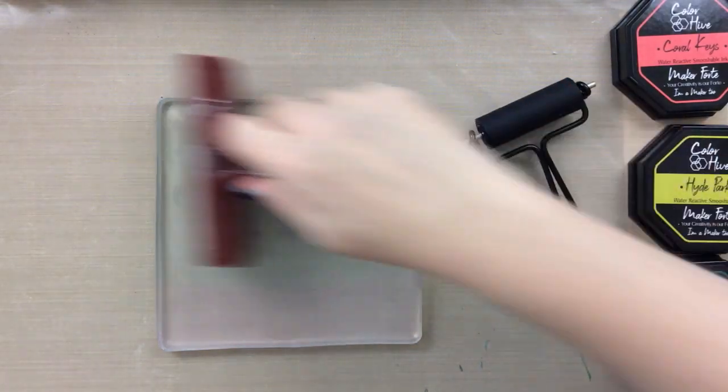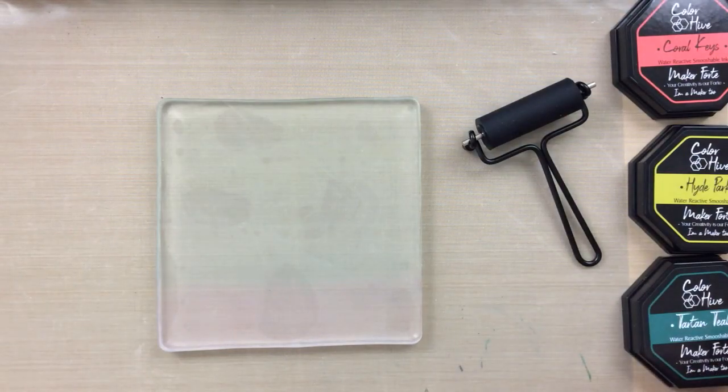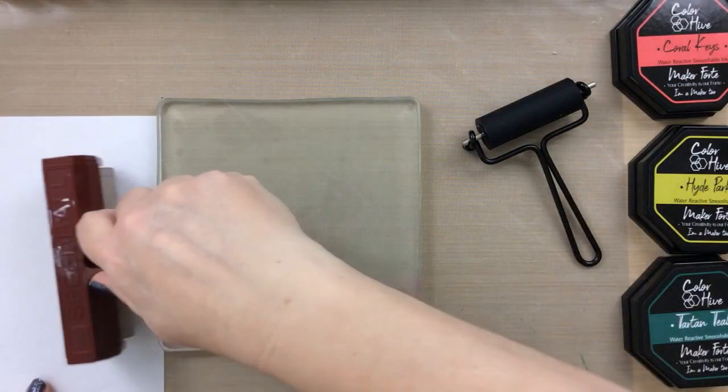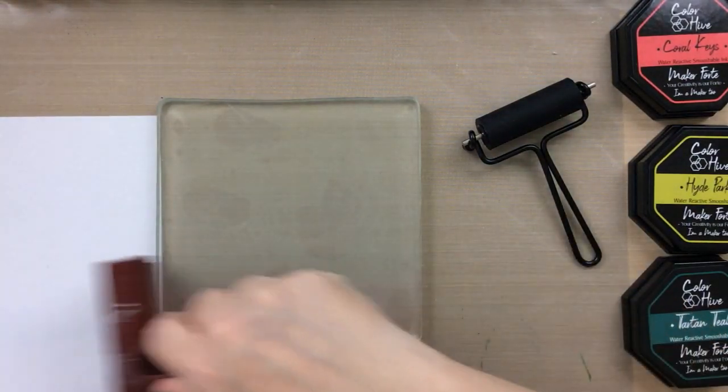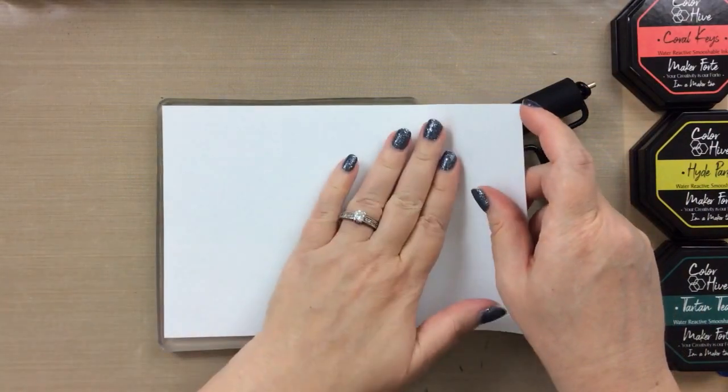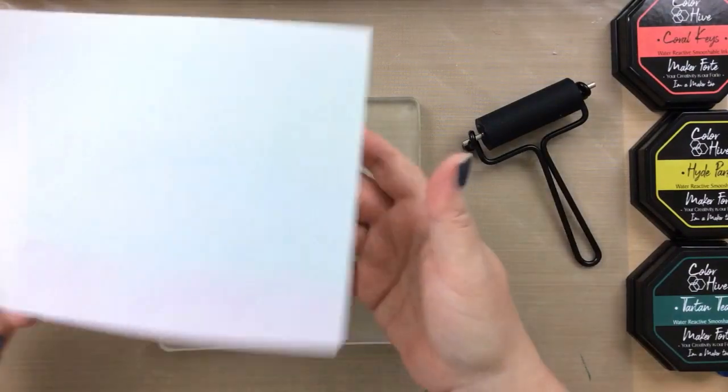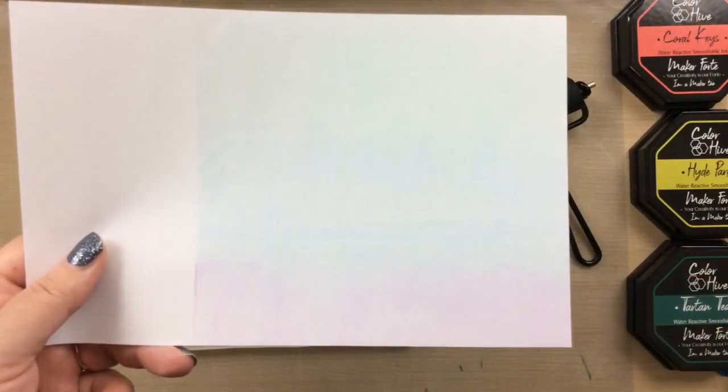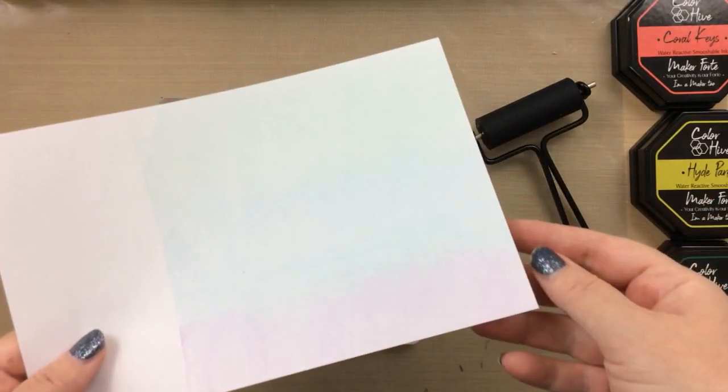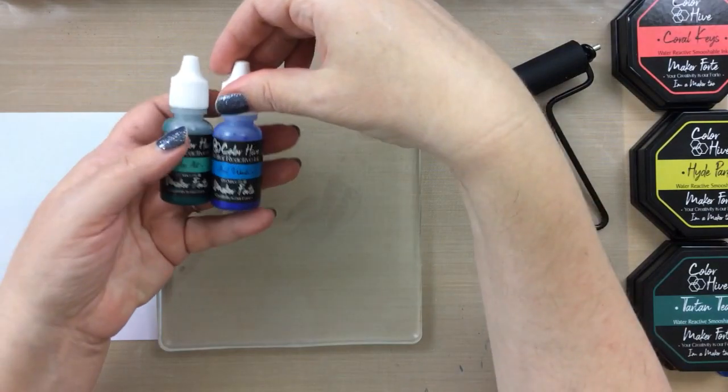So I just put them onto the gel press and now I am spreading out the color with my brayer. It's very difficult to see the color here. It doesn't even look like I have hardly any color on the gel press in this video, but I promise you it is on there. And I'm going to make a pull on just some regular computer paper to show you the color. Now it's very, very light. It's even lighter in the video than it is in real life. But this gives you a really light color on your paper.